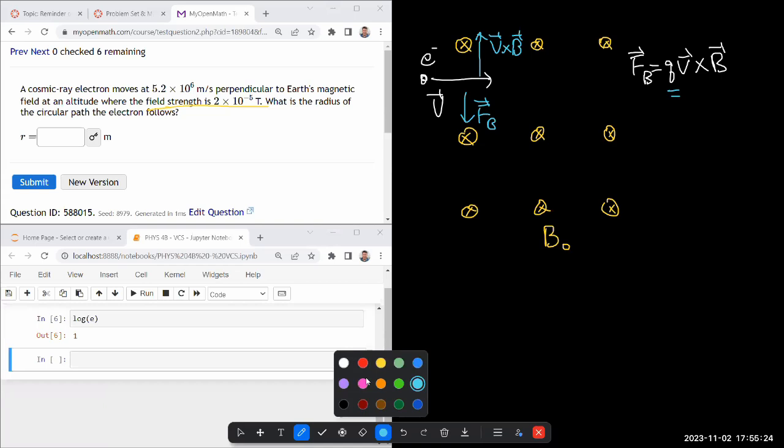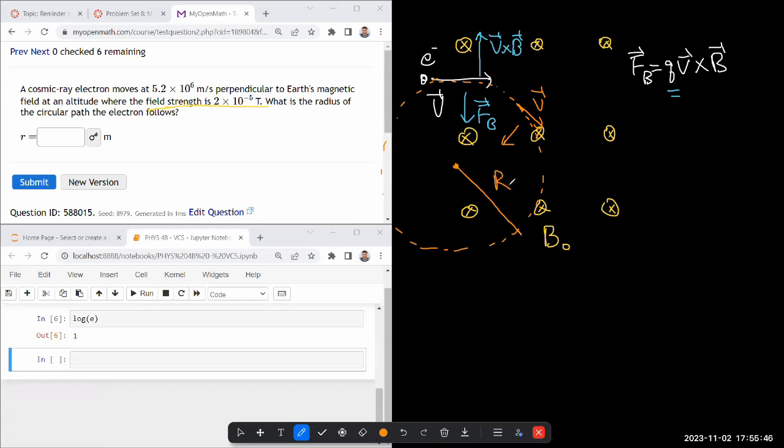So this particle is going to follow a trajectory that starts to bend downward. And as it bends downward, the direction of the velocity changes, the direction of the force changes along with it. It remains perpendicular. That's describing a circular motion. So the particle will end up undergoing circular motion of some radius R like this.